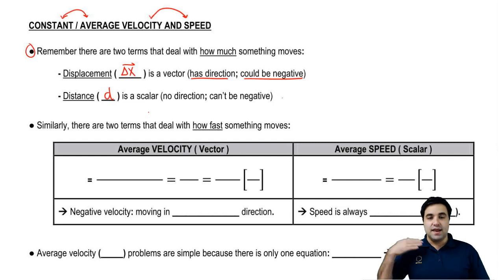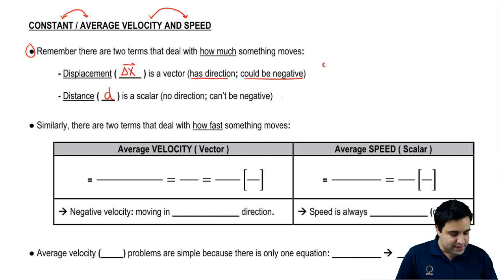Displacement and distance, in everyday language, are used interchangeably. In physics, there's a very clear distinction. Just a quick example here. If I move 3 and 4, my distance is 7, but my displacement is 5. So my delta x would be 5. They're different.